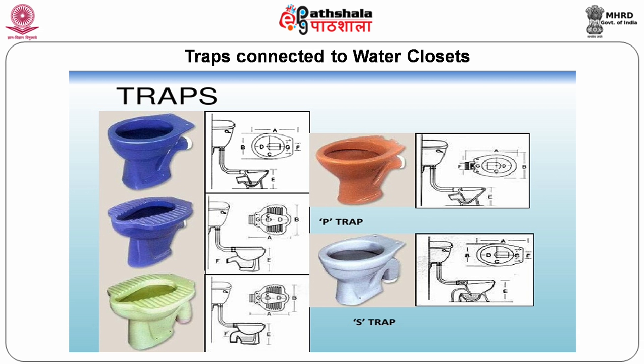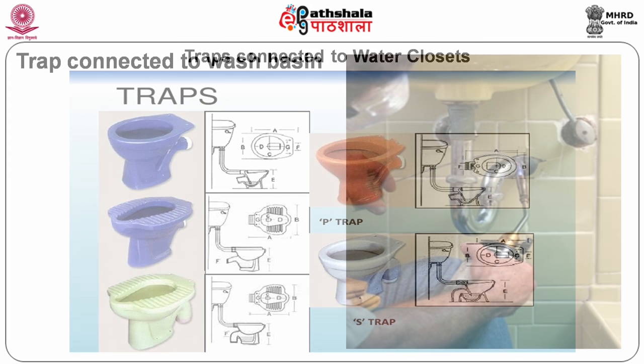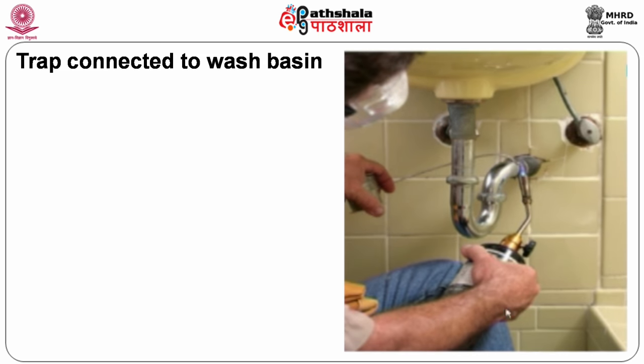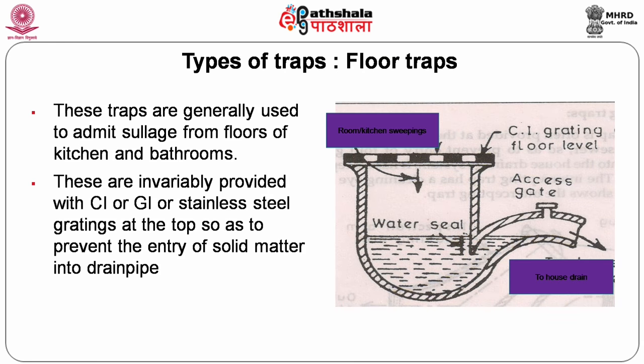These water closets are provided with traps. The traps are inbuilt with European water closets — all closets are manufactured with the trap. This is the P-trap arrangement, here the S-trap, and this is the Q-trap arrangement. The trap can also be fixed to the bottom of the washbasin.